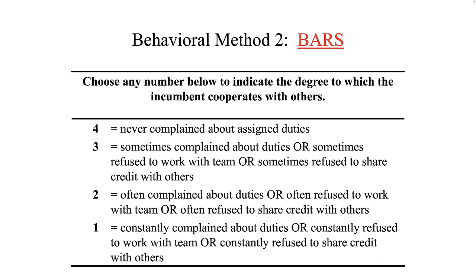The Behaviorally Anchored Rating Scale, or BARS, is a behavioral approach to performance appraisal that consists of a series of vertical scales, one for each important dimension of job performance. Each number on the response scale is anchored by a behavior. For example, choose any number to indicate the degree to which an incumbent cooperates with others, with responses ranging from one to four. The behavioral anchors ensure that a score of one — or a score of three — means the same thing to every rater, because the behavioral evidence is the same when seen by every person. This is the decided strength of this particular technique.